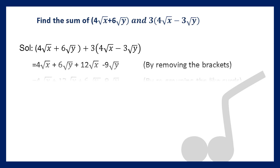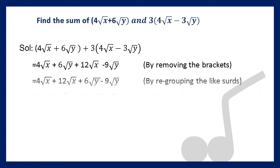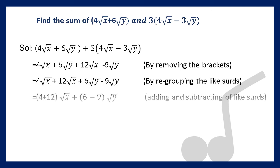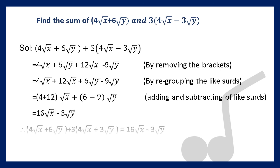By regrouping the like surds we get 4 into root x plus 12 into root x, plus 6 into root y minus 9 into root y, which is equal to 16 into root x minus 3 into root y.